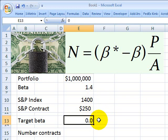So we only need to select our target beta. Currently, the portfolio has a beta of 1.4. I'm going to use zero, which means I'm aiming to perfectly hedge the portfolio.